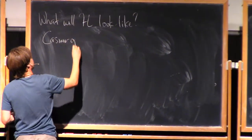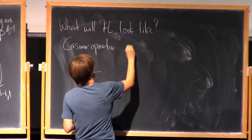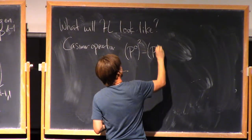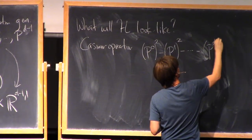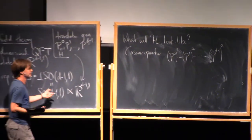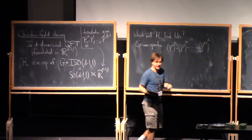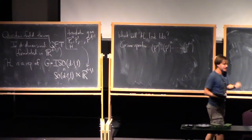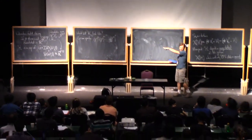An operator in the universal enveloping algebra: P0 squared minus P1 squared minus ... minus P_{d-1} squared. Essentially because the inner product of Minkowski space is invariant under this group, this operator in the universal enveloping algebra of our Lie algebra will be in the center — so that's a Casimir operator. It acts as a scalar in every irreducible representation, so we can use that to organize the representations.